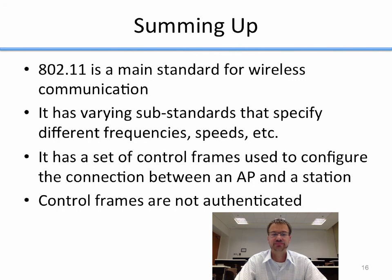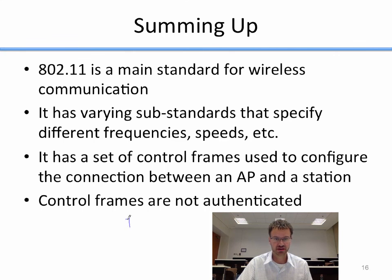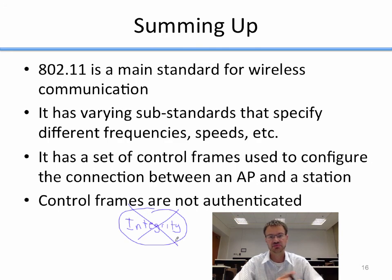To summarize: 802.11 is the main standard for wireless communication — Wi-Fi — with substandards like B, G, N, and AC specifying different frequencies and speeds. It also has a set of control frames used to configure and maintain the connection between an access point and its stations. Critically, these control frames are not authenticated, meaning they have no integrity protection. Keep that in mind as we move forward, because we'll come back to this important point when discussing security issues.